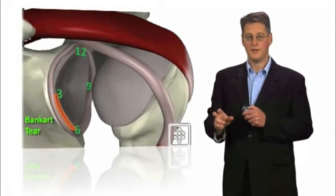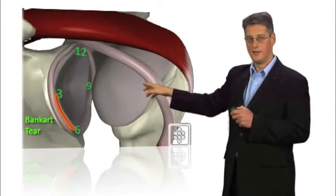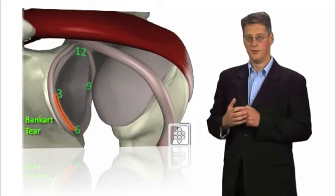So a tear that occurs from three to six o'clock is known as a Bankart tear and this is associated with dislocations that come out of the front of the shoulder.